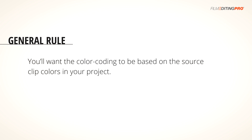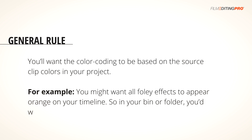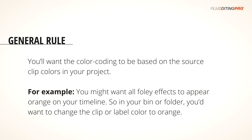To start, you'll want the color coding to be based on the source clip colors in your project. For example, you might want all foley effects to appear orange on your timeline, so in your bin or folder you'd want to change the clip or label color to orange.